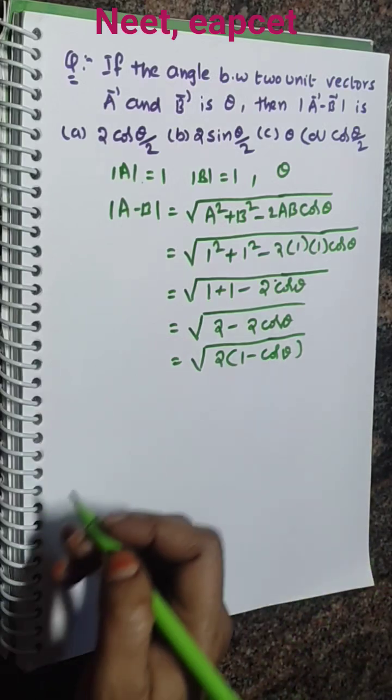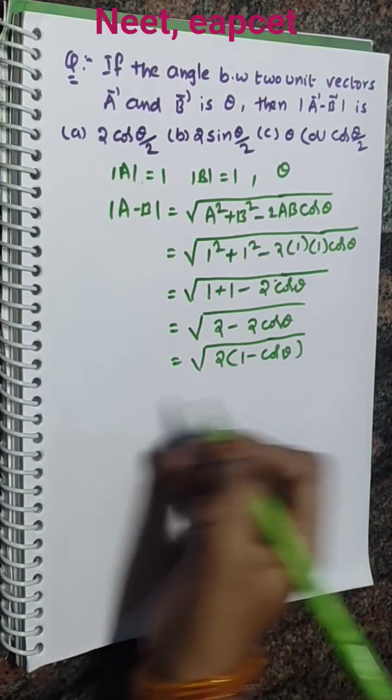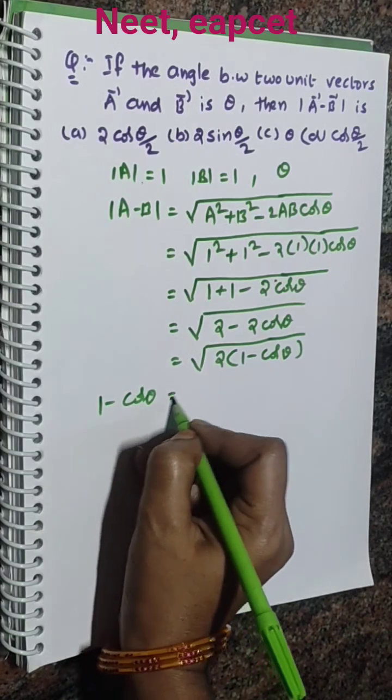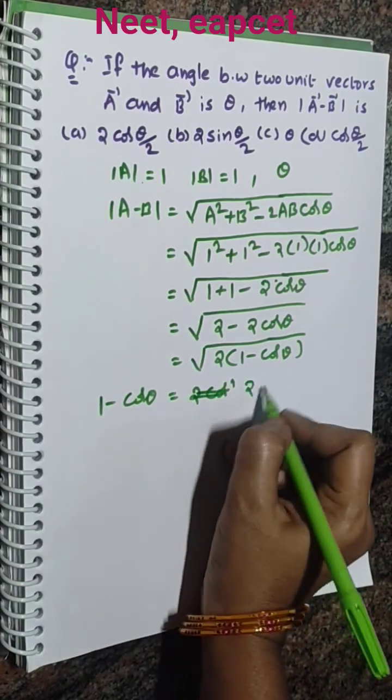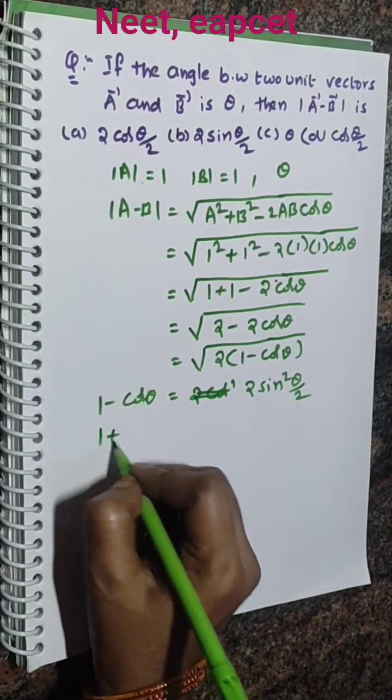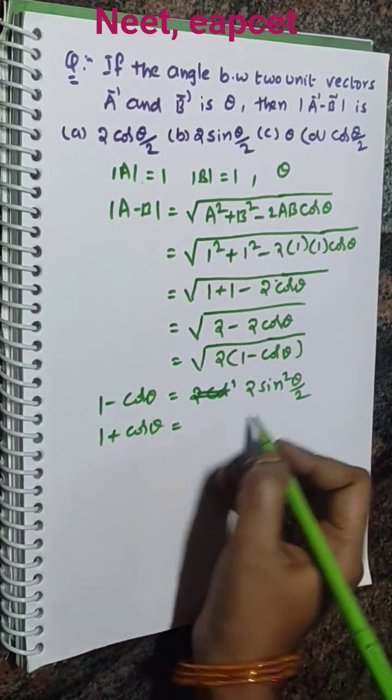Now we use the trigonometric identity: 1 minus cos theta equals 2 sin squared theta by 2.